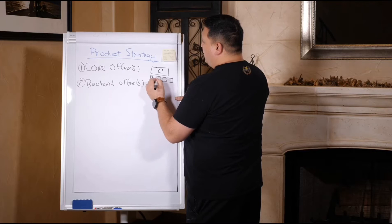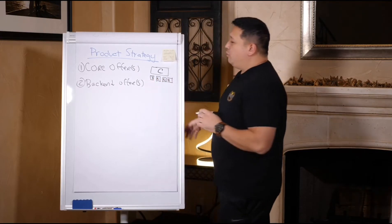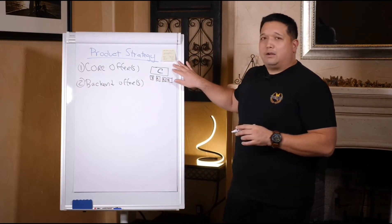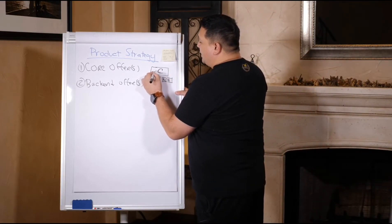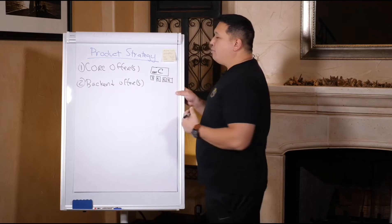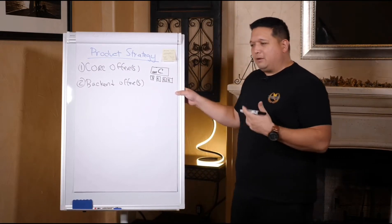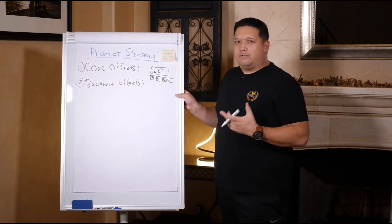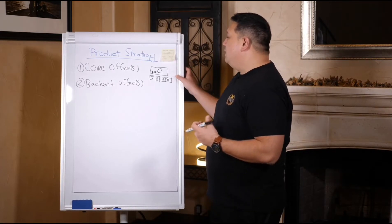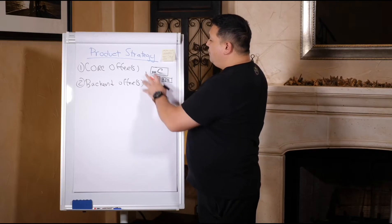When people first come in to buy your stuff, you're selling them a core offer. Core offer really means it's a high ticket item. This is generally a profit maximizer - it's going to be your highest profit margin and your highest profit dollars. The volume of dollars is going to be the highest here.